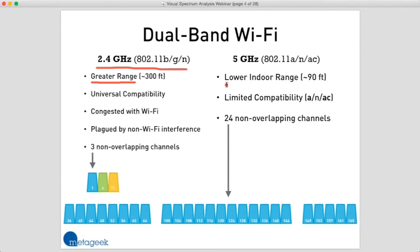In the 5 gigahertz band, the wavelength is much shorter — the waves are much closer together — so we see a lower indoor range. The signals attenuate faster, which means they get blocked more easily by things like walls, doors, windows, desks, filing cabinets, and people. The result is an indoor range of only about 90 feet, so the range with the 5 gigahertz band isn't nearly as good.